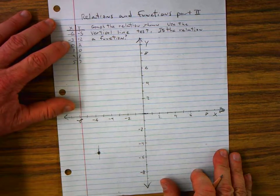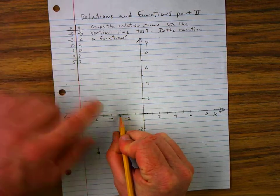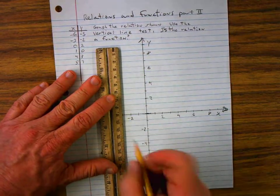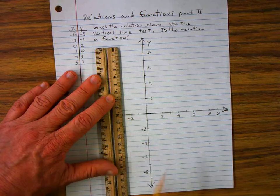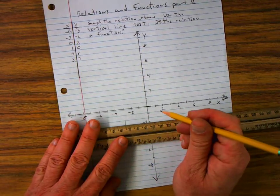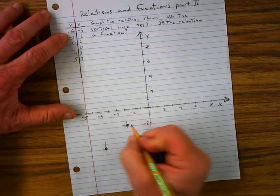My second ordered pair is negative 3, negative 2. Negative 3. And then I go down negative 2. So again using my ruler. Make my mark there. And going down. That's my Y value of negative 2. Put my mark. That's my second ordered pair.